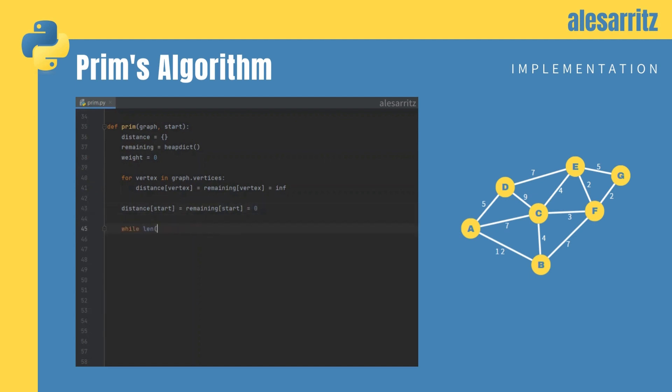Now, let's loop through remaining. First, let's pop v, the vertex with the minimum distance from the tree, and set its in tree status to true. If we are not in the start vertex, let's also add the weight of the added edge.